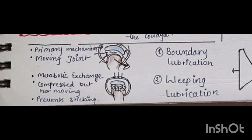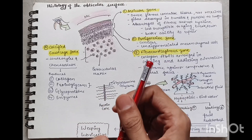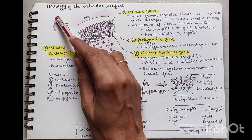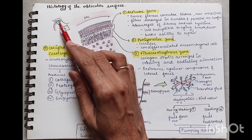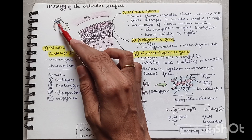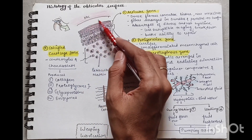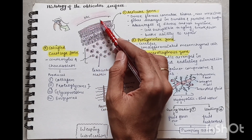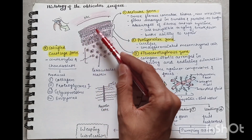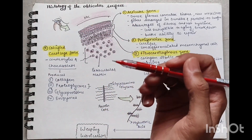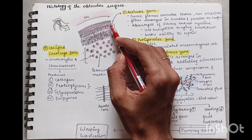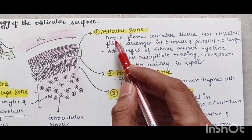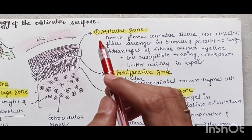Now let's understand the histology of the temporomandibular joint. The articular surface includes both the articular surface of the temporal bone and the articular surface of the condyle. The articular surface of the condyle can be divided into four different zones histologically. The uppermost zone is the articular zone, which is made up of dense fibrous connective tissue — not hyaline cartilage — and its fibers are arranged in bundles parallel to the surface.